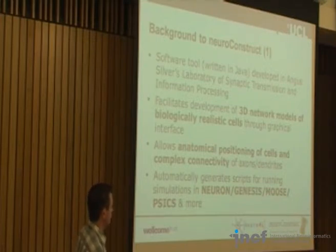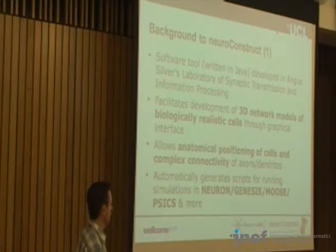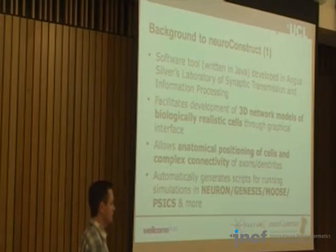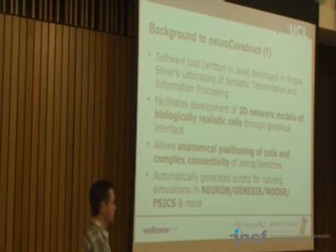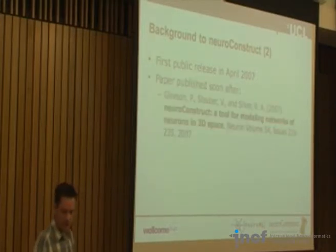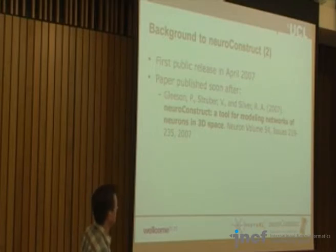Different simulators have different capabilities, but a very good feature is the ability to compare across simulators. Because models are complex, there could be something simulator-specific built in that you don't want. You want a model of the physiology that produces the same behavior independent of what software you run it on. NeuroConstruct has been around since the first public release in 2007, with a publication in the journal Neuron. There's a mailing list, it's open source, anyone can download it, edit it, and send feedback. Funding covers another couple of years, so it will be around for a while.